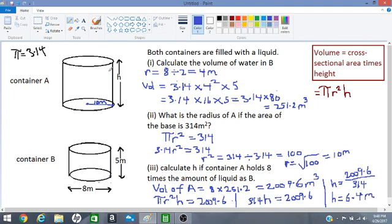6.4 meters. It is more than 5 and when we look at the diagram it looks like it is taller. Container A is taller than container B. So that is our answers. Keep practicing and all the best to you.